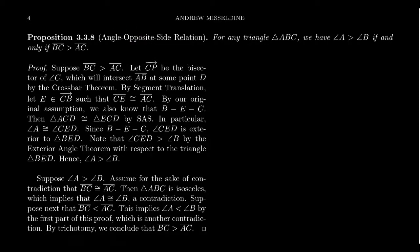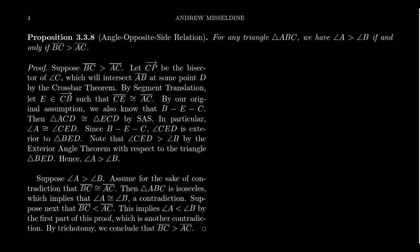When I use three-letter acronyms like SAS or AAS, this often makes us think of triangle congruences. The angle-opposite-side relation is not a congruence criterion, it's a relation. But in many ways you can use it in similar ways to triangle congruences. Let me say exactly what it says.